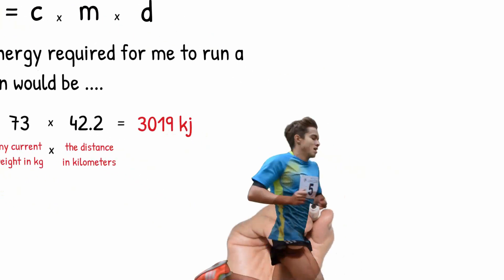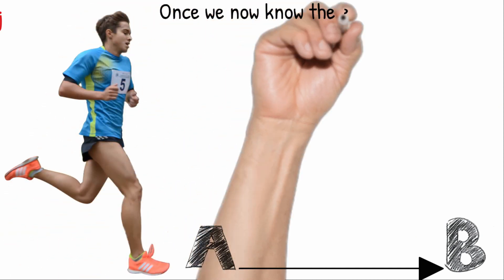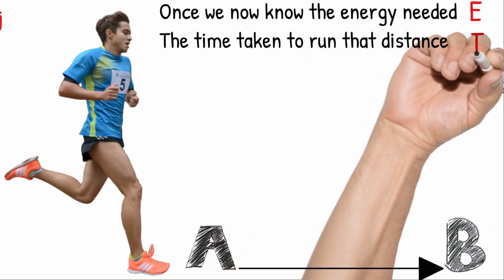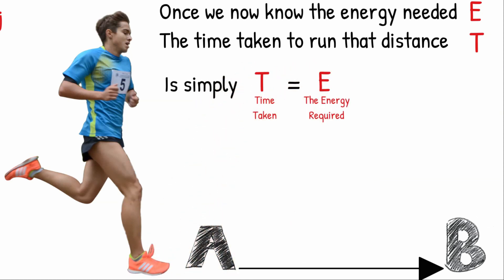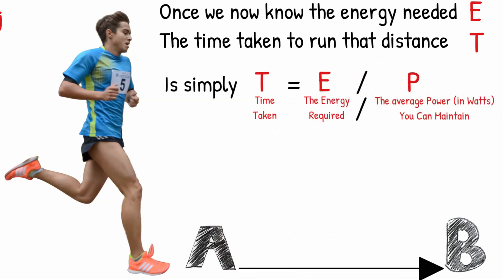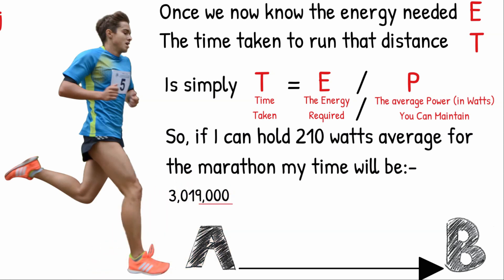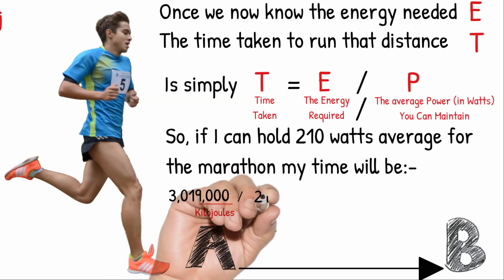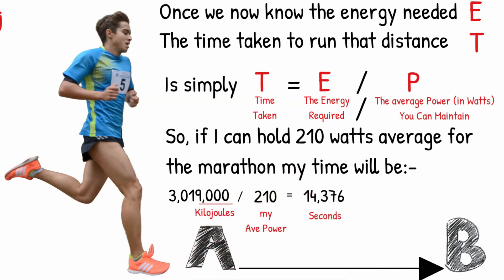When we run, we generally run from A to B and want to know the time. Once we know the energy requirement E, the time taken to run that distance T is simply T equals E divided by P — the average power that you can sustain for that distance. So if I can hold 210 watts average for the marathon, my time will be 3,019 kilojoules divided by 210 — my average power output — which equals 14,376 seconds, or 3 hours, 59 minutes, and 36 seconds.